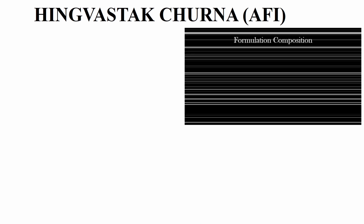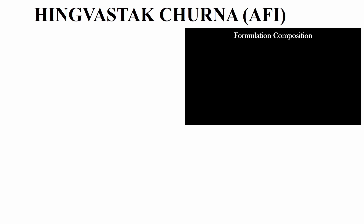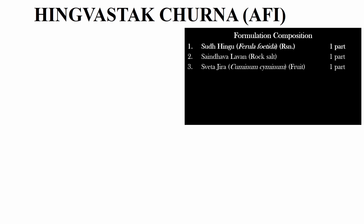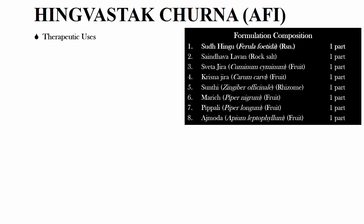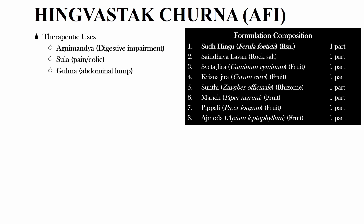Hing Vastak Churn is an Ayurvedic formulation having 8 ingredients in equal portion. The ingredients are Sudhhing, Sendhalavan, Swayajjira, Krishnjira, Sundhi, Marij, Pibli, and Asmood. The therapeutic uses of Hing Vastak Churn include Agni Mand (Digestive Impairment), Sula (Colic Pain), Gulma (Abdominal Lump), and Vata Rog (Disease due to Vata Dosha).